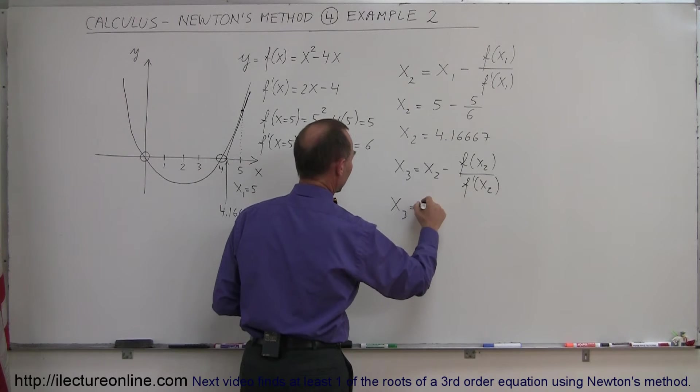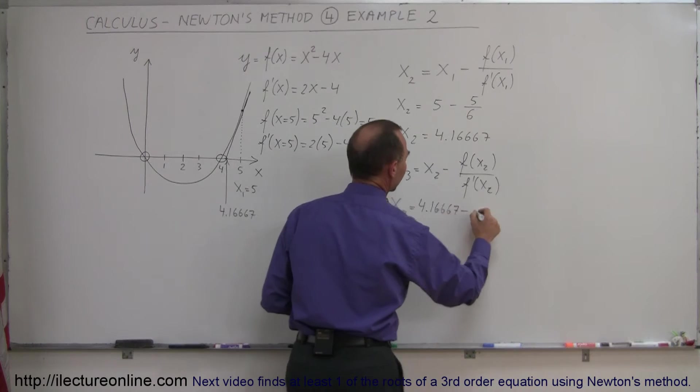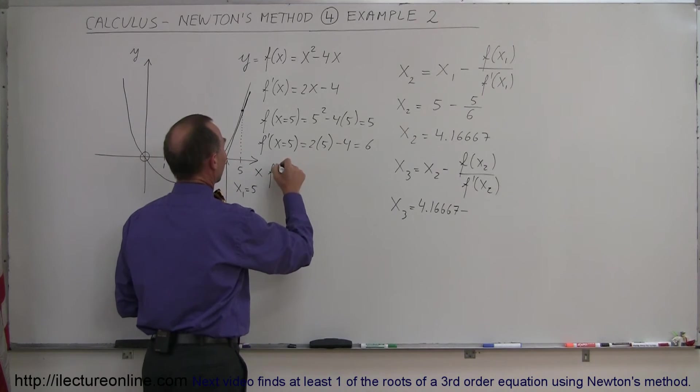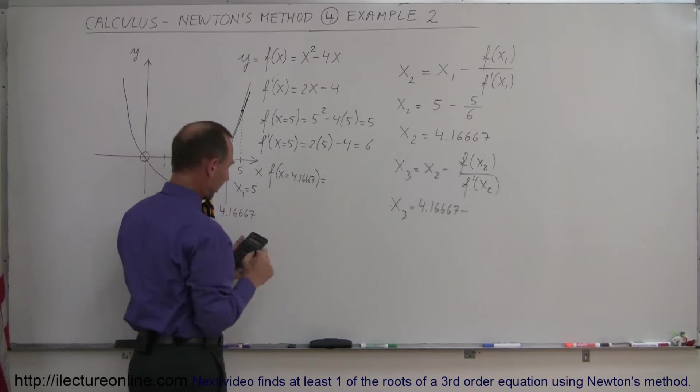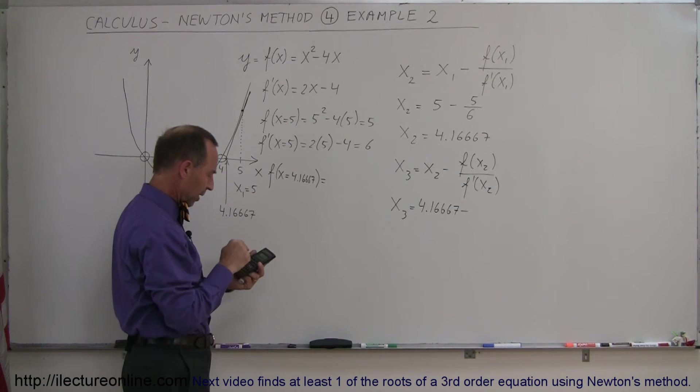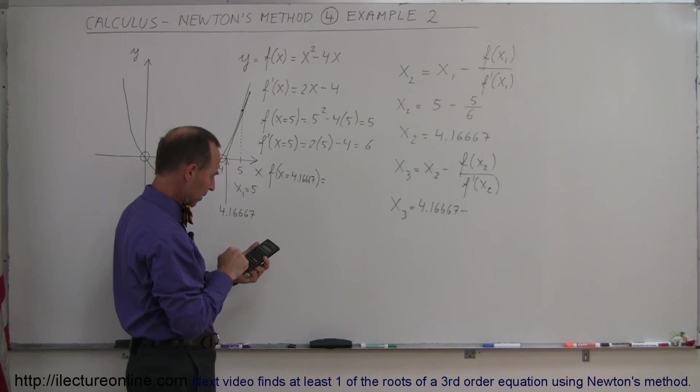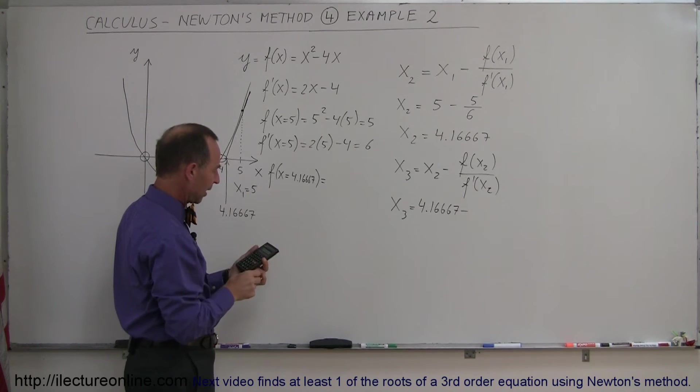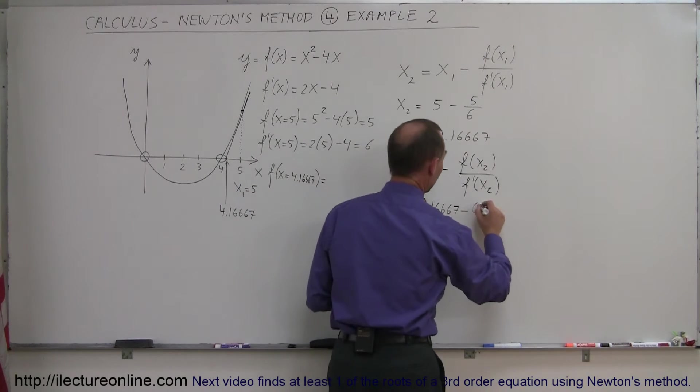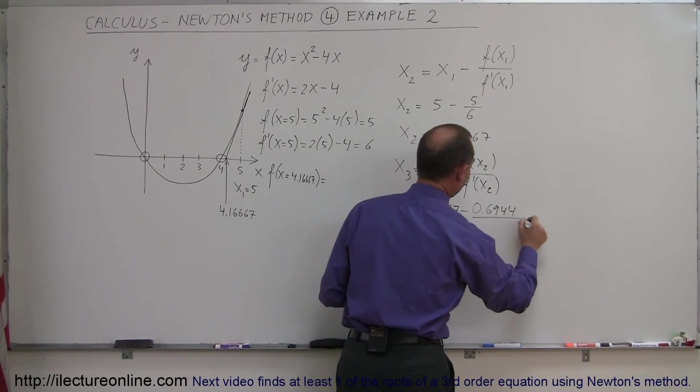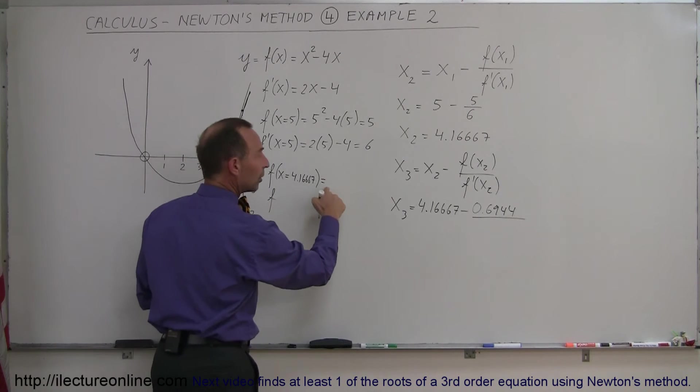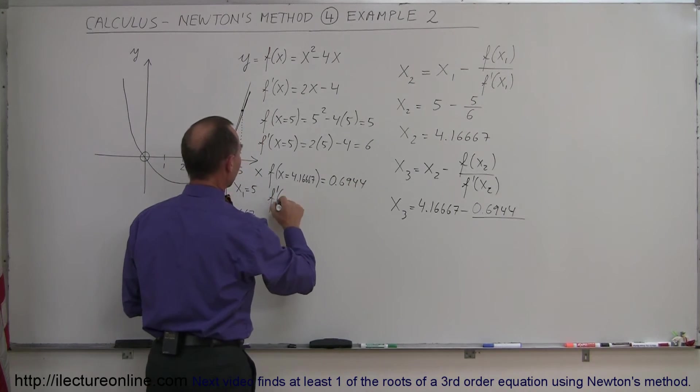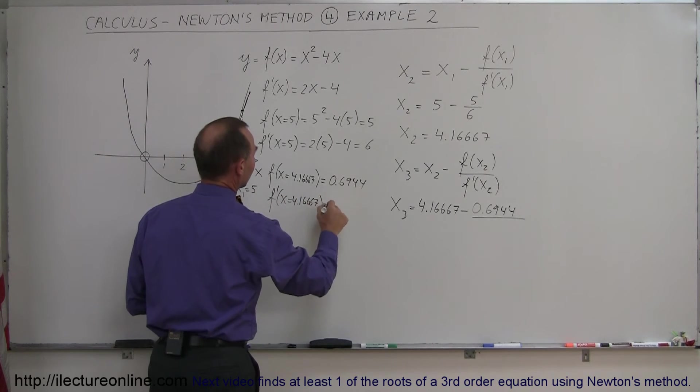So x3 is going to be x2, which is 4.16667, minus the function evaluated at x2. So f of x is equal to 4.16667 should equal, well, let's find out. Where's my calculator? Right here. So we take that number squared minus 4 times that number. So 4.16666 squared minus 4 times 4.16666 equals, and we get 0.6944, close enough. So 0.6944 and divided by the derivative evaluated at that location.